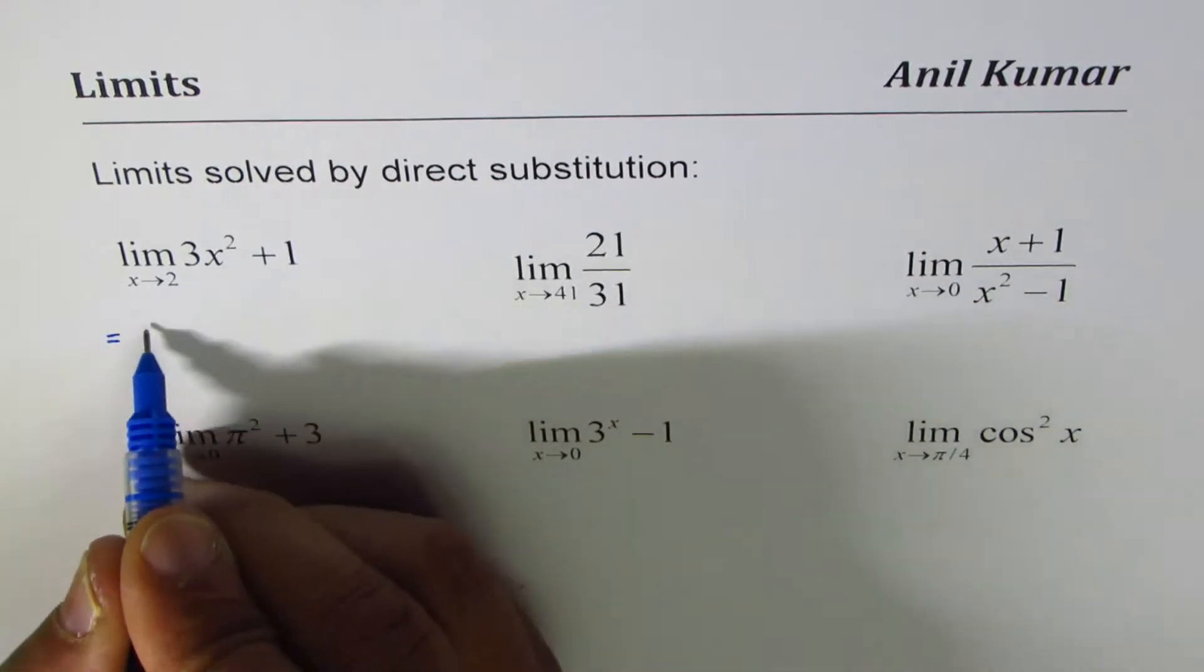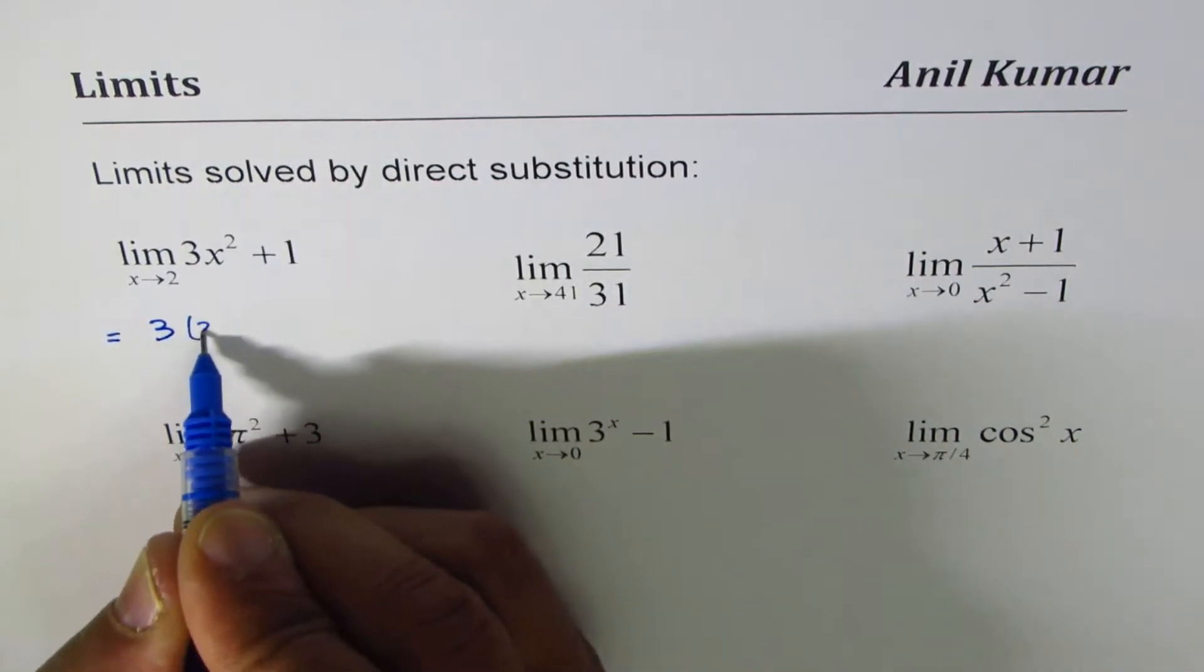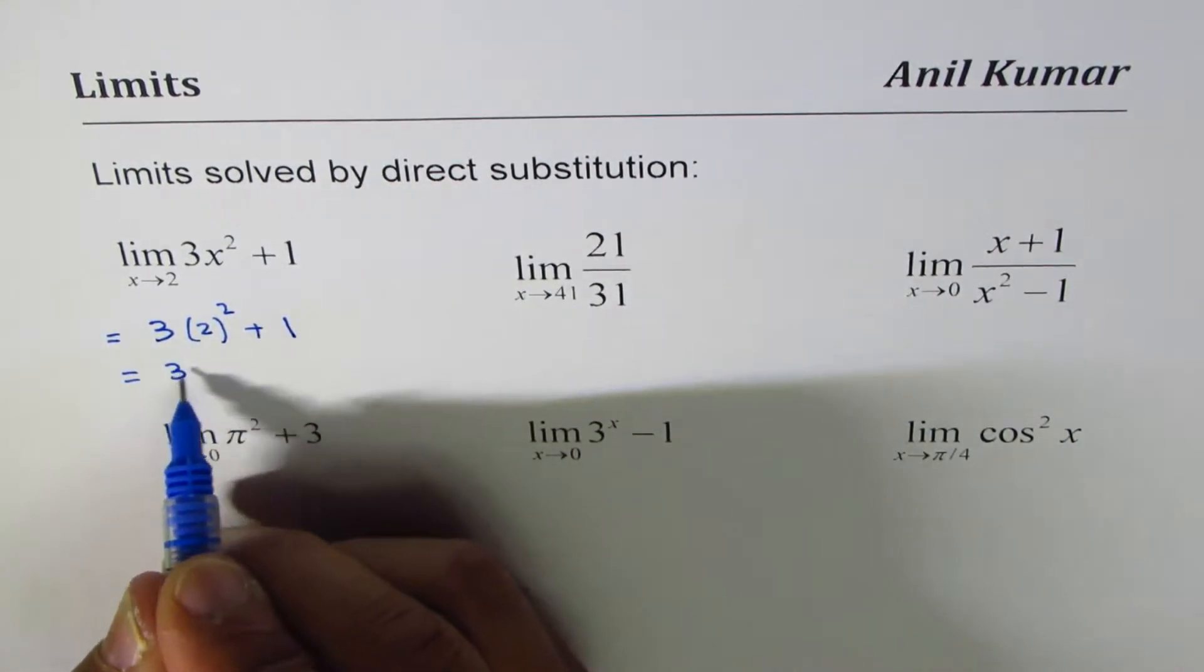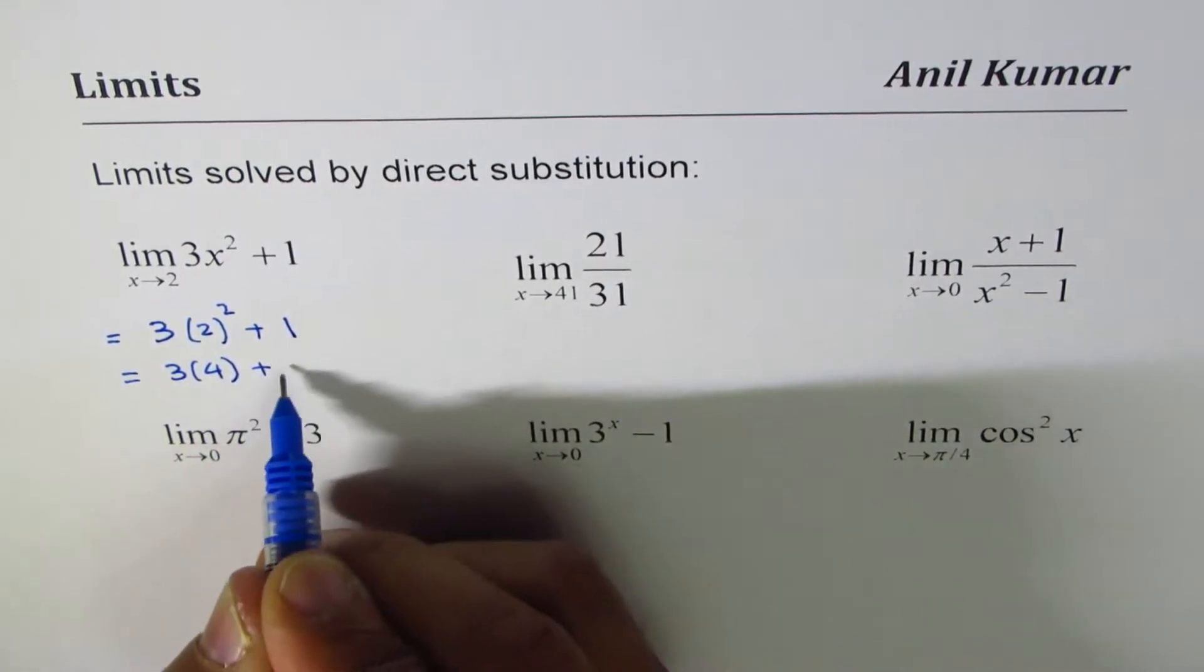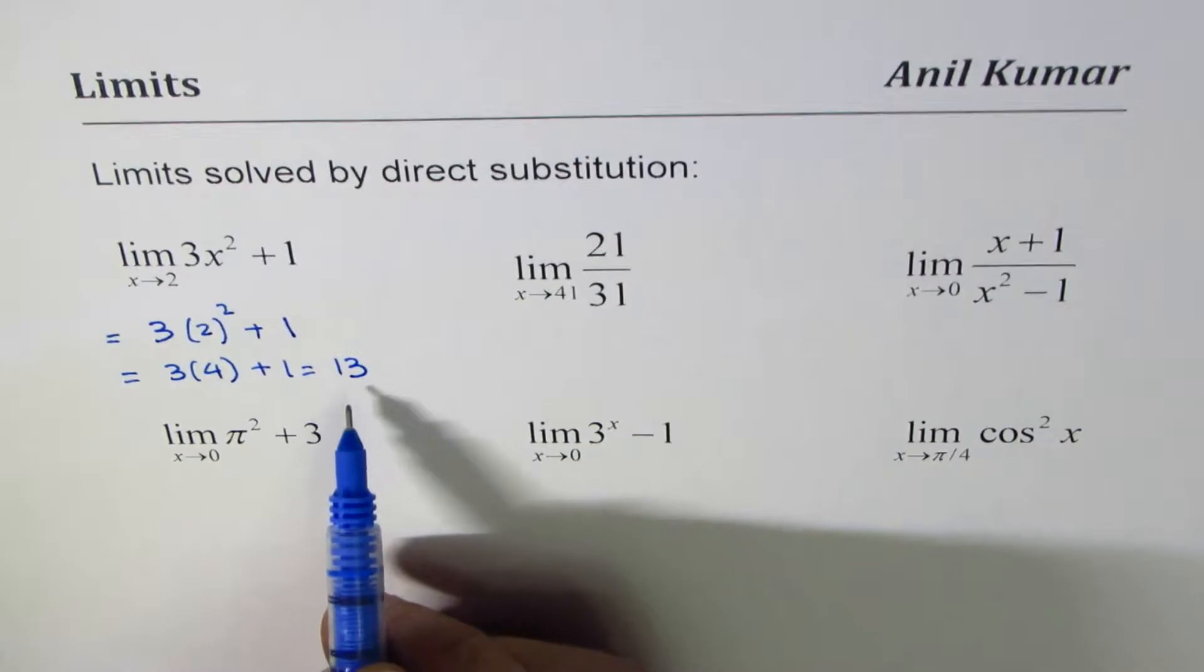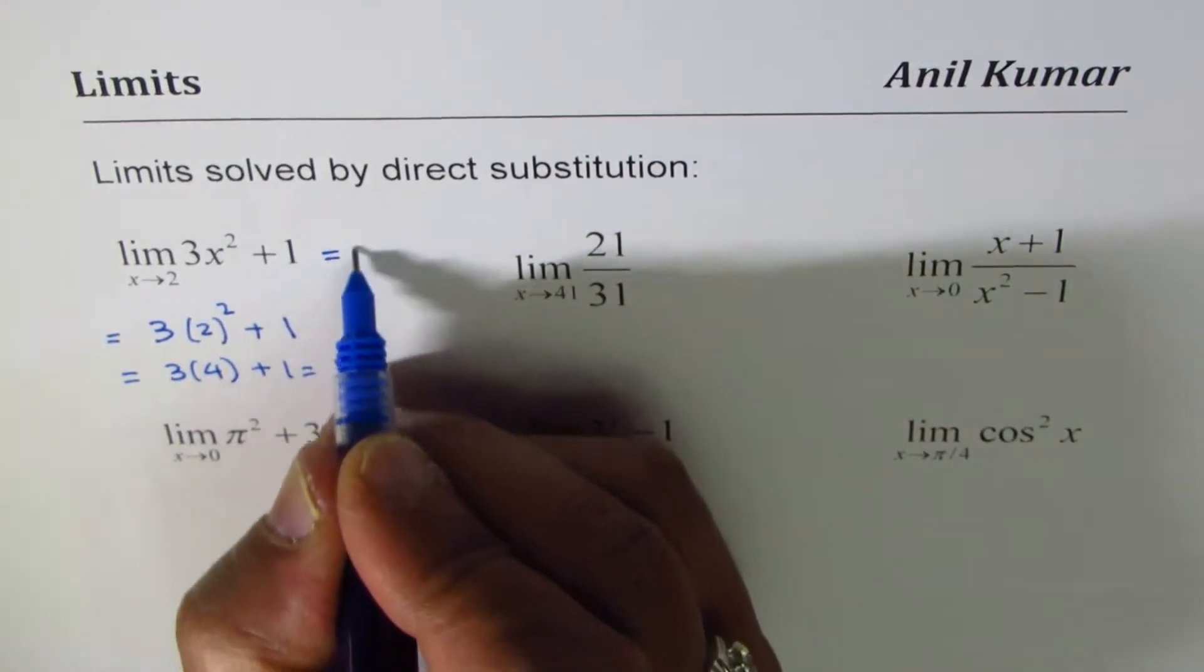So if I substitute 2 here, what do I get? I get 3 × 2² + 1, and that is 2² is 4, 3 × 4 + 1, so we get the answer is 13. If you get a valid number here, zero is also valid, then the limit exists and that's the value of the limit. So this limit is 13.